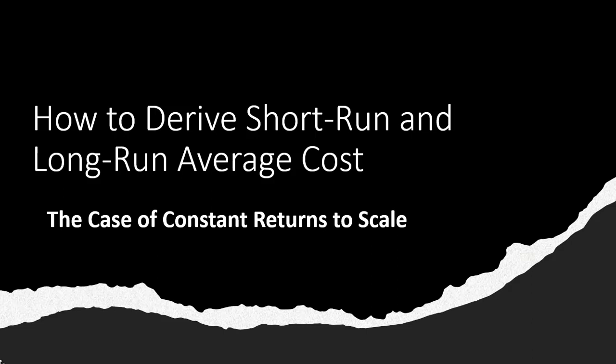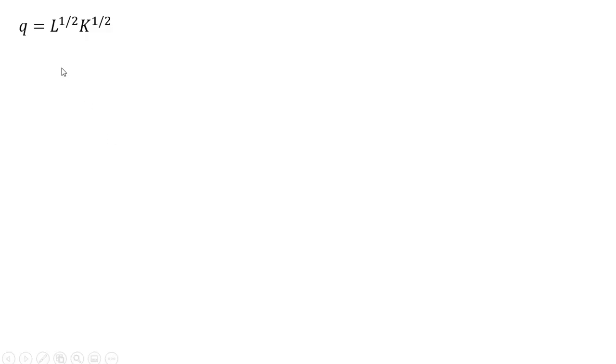How to derive short-run and long-run average cost when dealing with constant returns to scale. So here's the firm's production function. We're dealing with the Cobb-Douglas production function, and it has constant returns to scale because the sum of the exponents sum to 1.